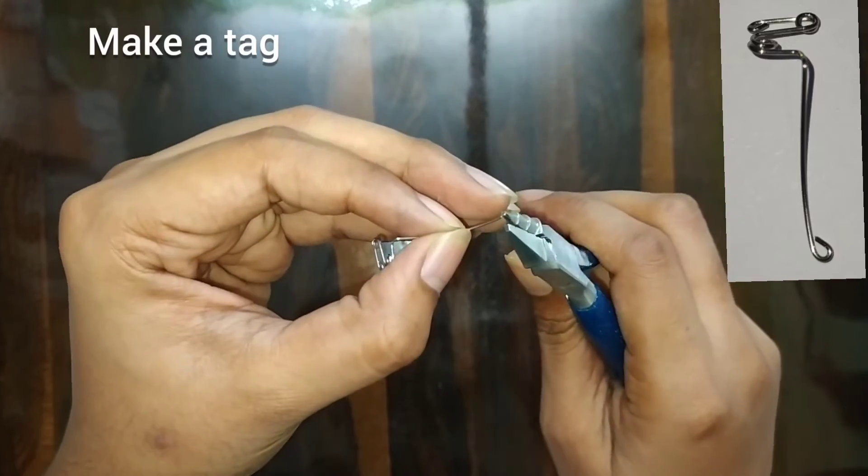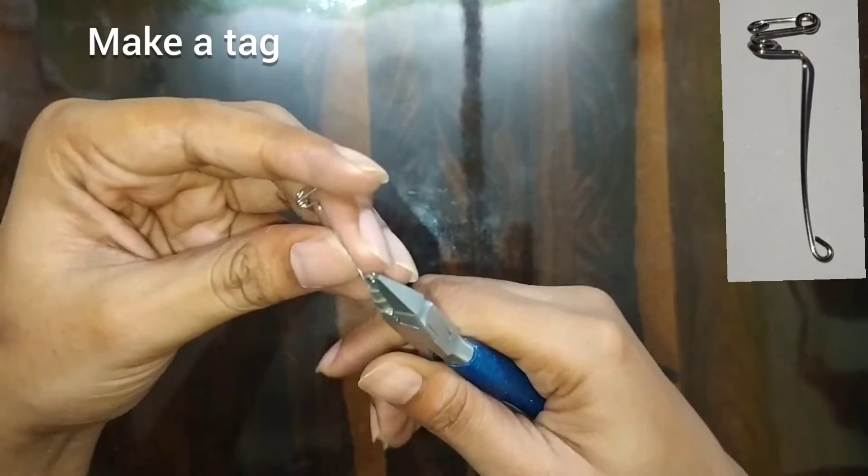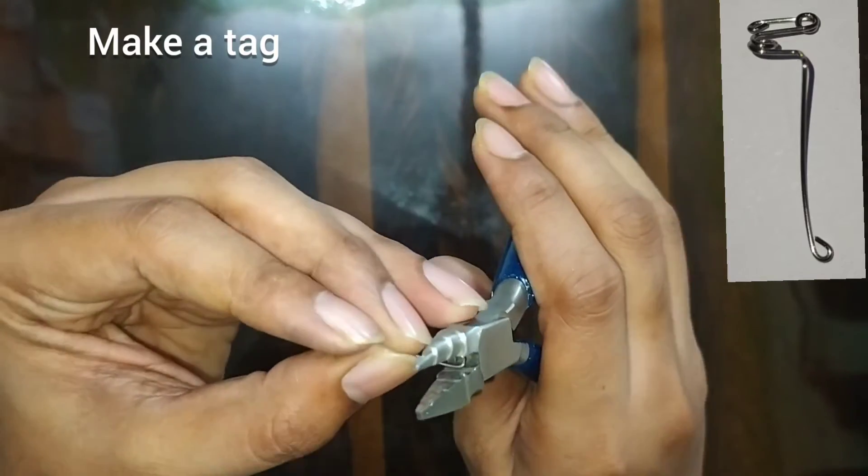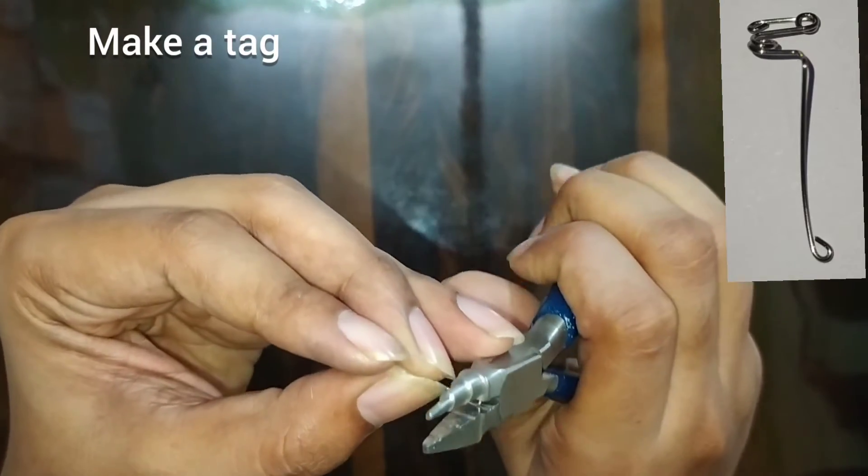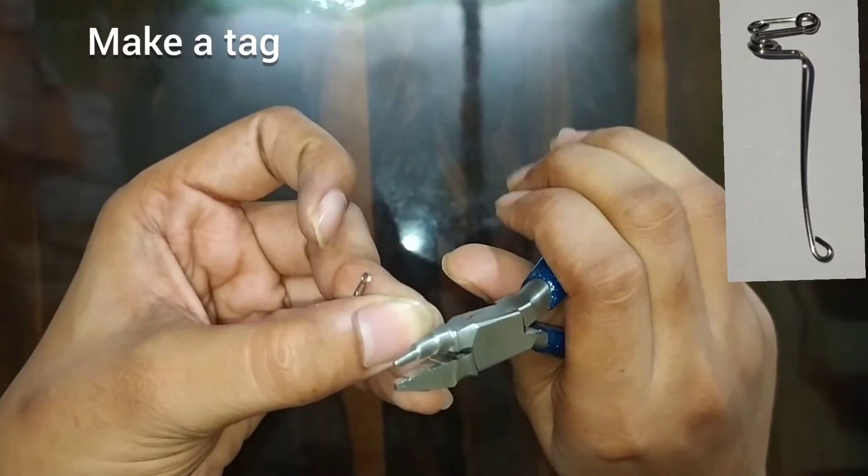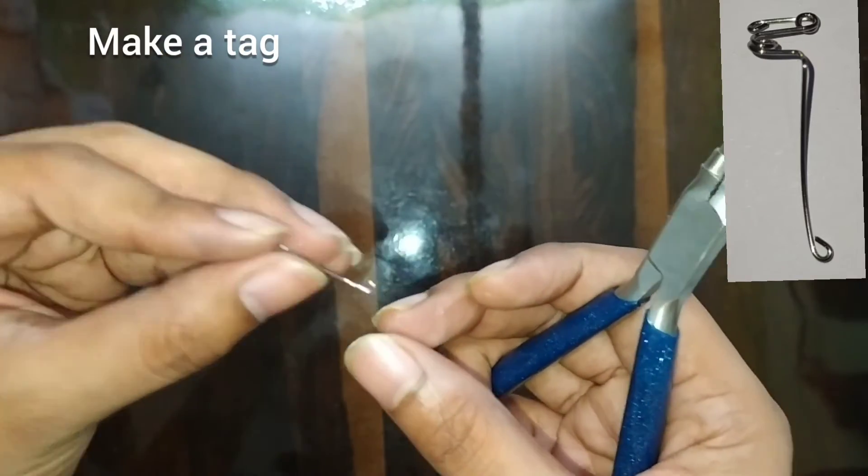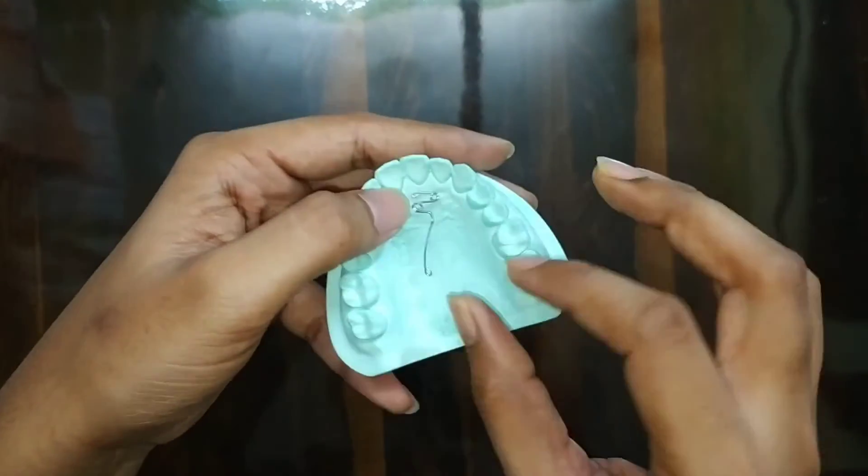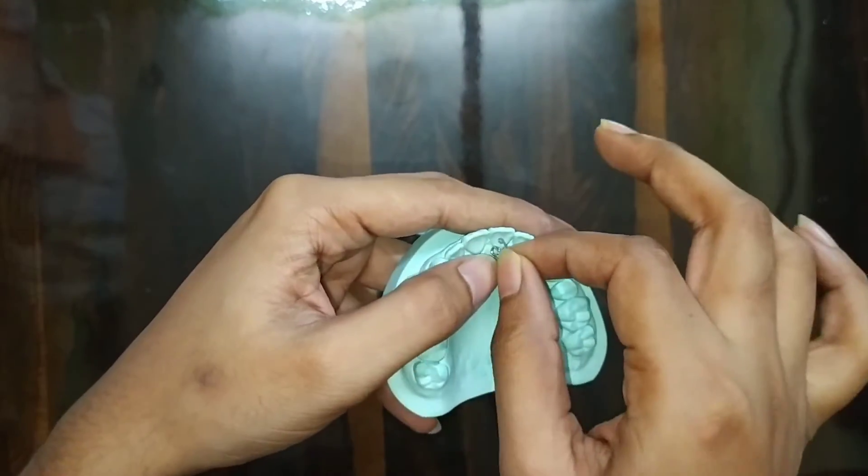After this, make a small tag at the end of the wire. In this way we can see here our Z spring is ready.